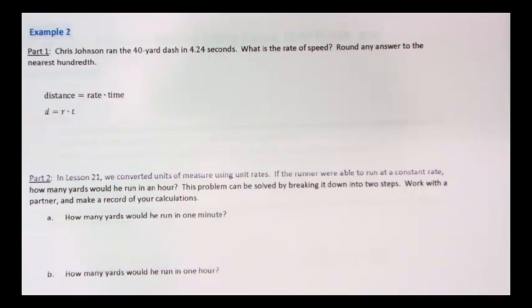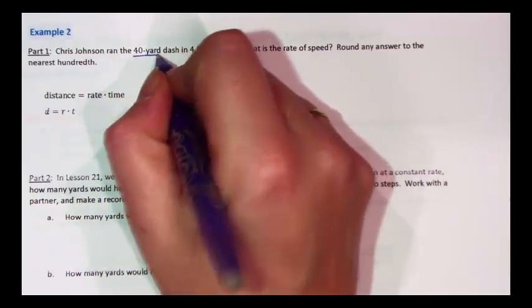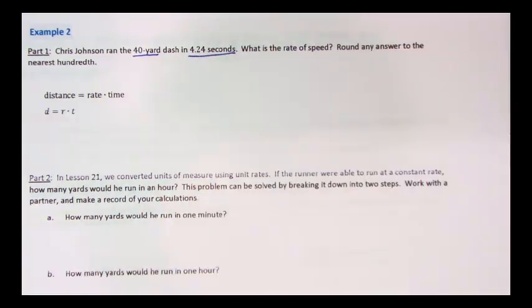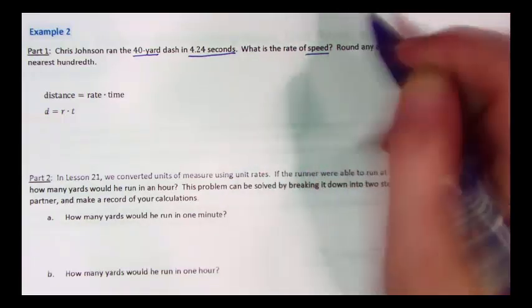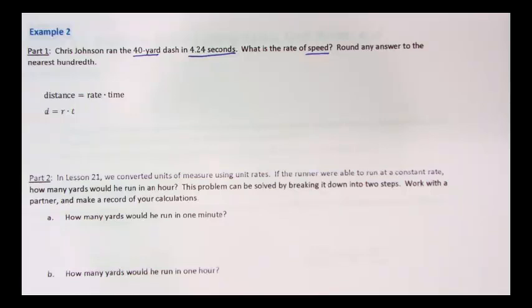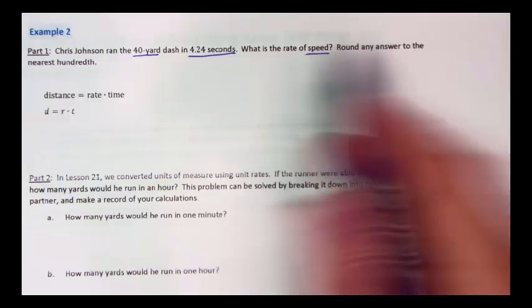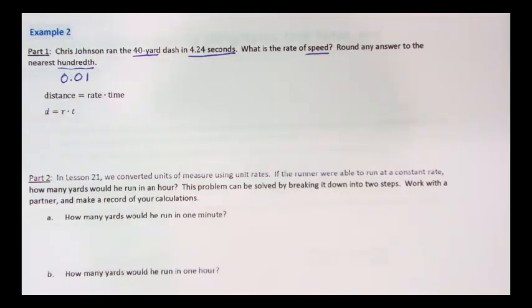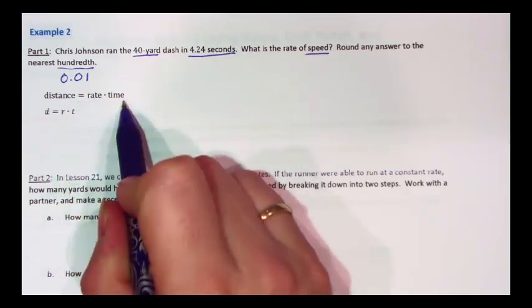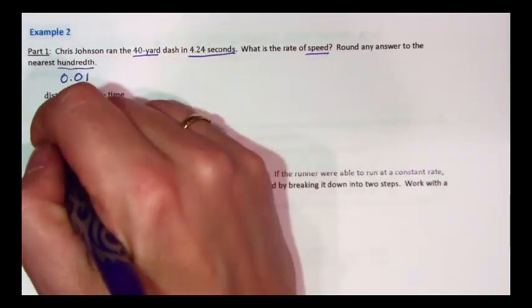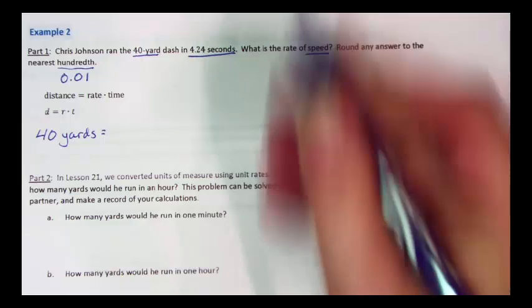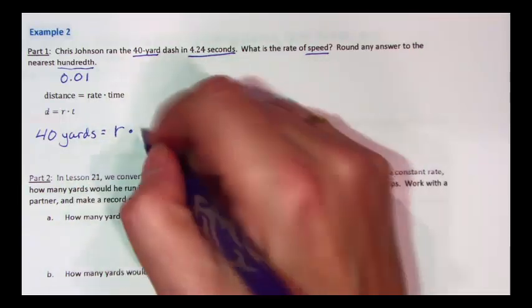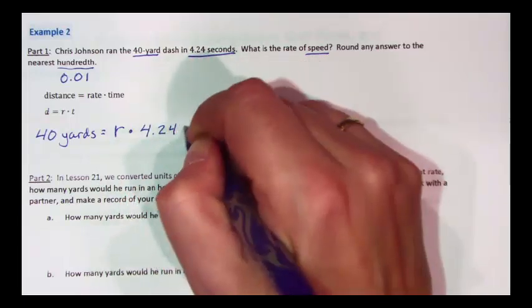Here's another example. In this example, we have Chris Johnson running the 40-yard dash in 4.24 seconds. 40 yards in 4.24 seconds. What is the rate of speed? Whenever you see the word speed, you should be thinking distance divided by time. And we're going to round any answer to the nearest hundredth. Remember, hundredth is the second place value after the decimal. Here's our equation again: distance equals rate times time. Our distance is 40 yards. We don't know our rate, that's what we're going to find. And we know our time is 4.24 seconds.